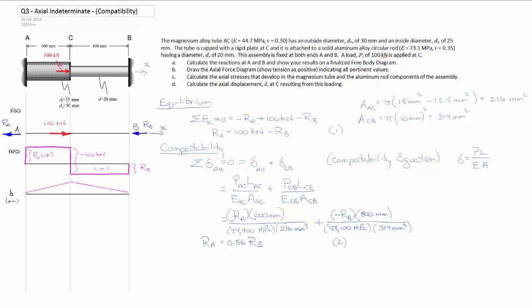So now we have two equations, two unknowns, straight up algebra. We substitute one into the other in order to solve it. I've set this up to make it easy to substitute two into one. 0.56 RB is equal to 100 kilonewtons minus RB.